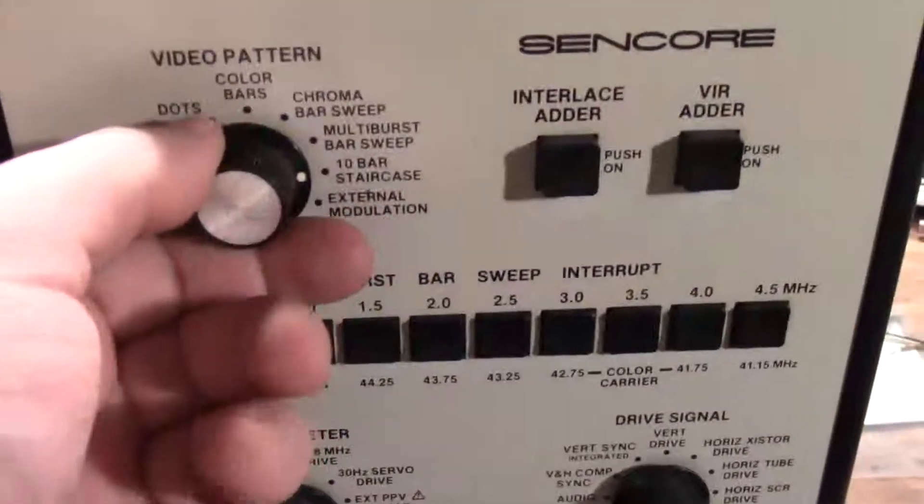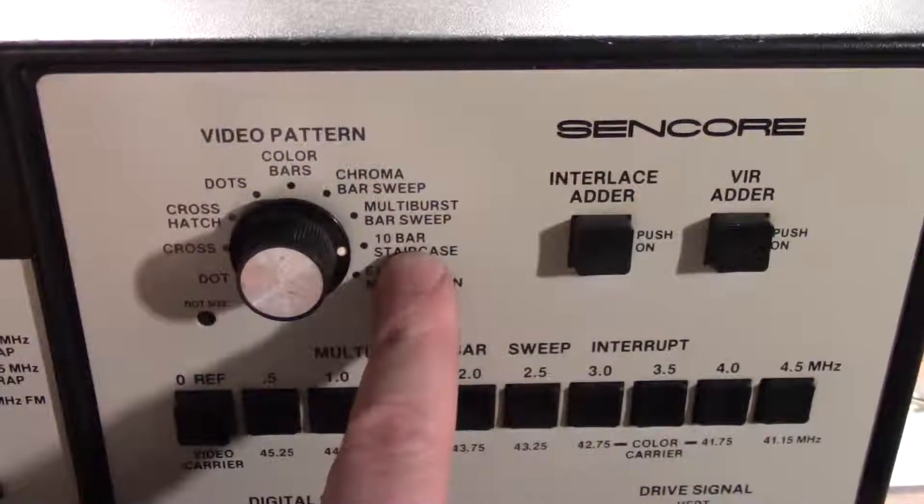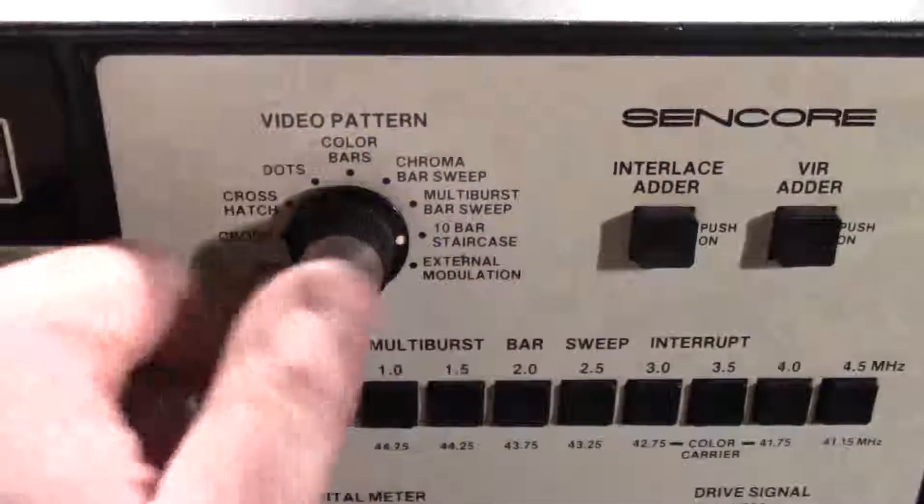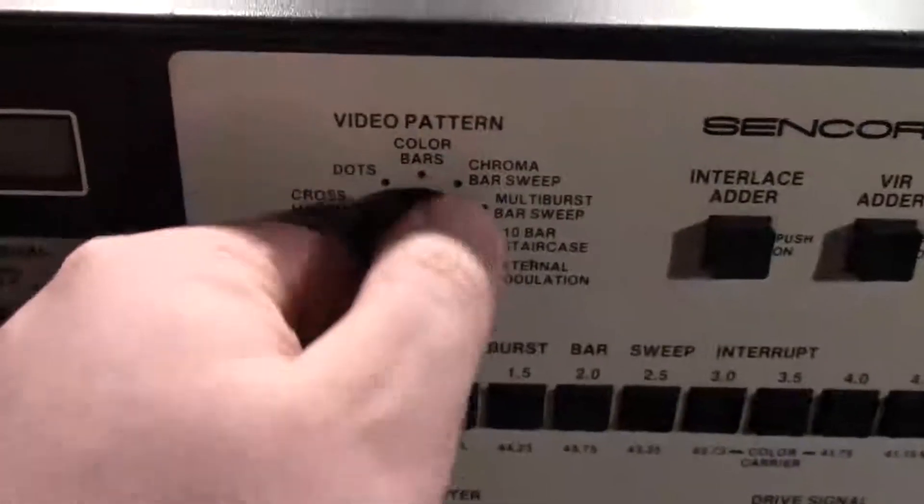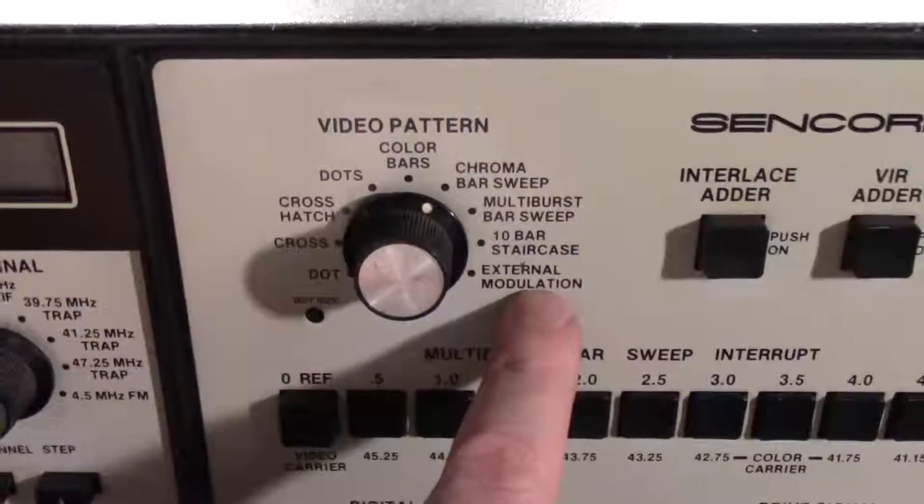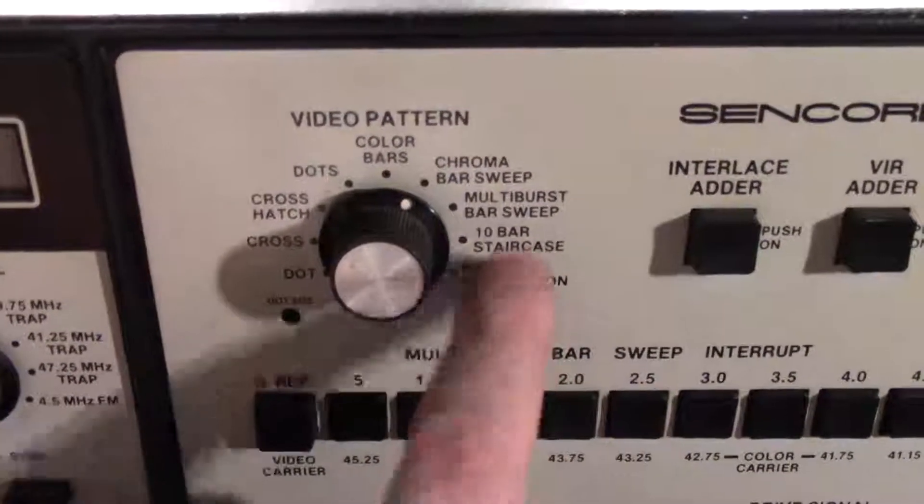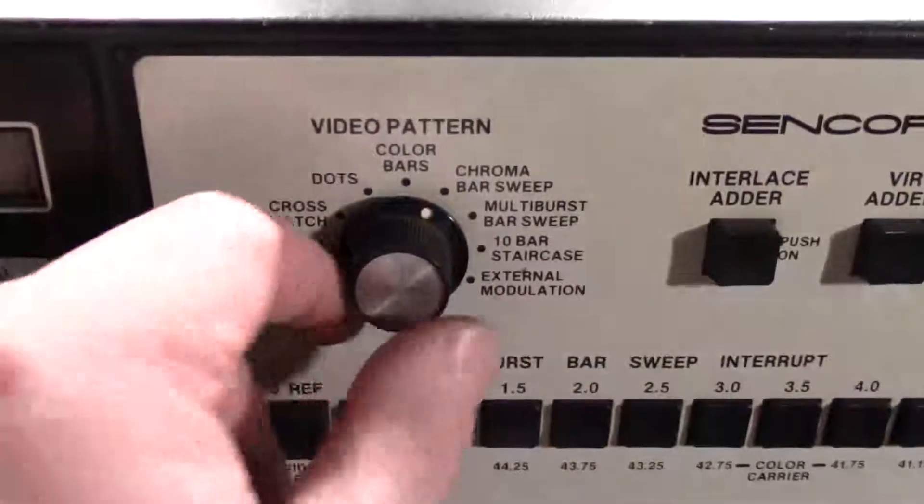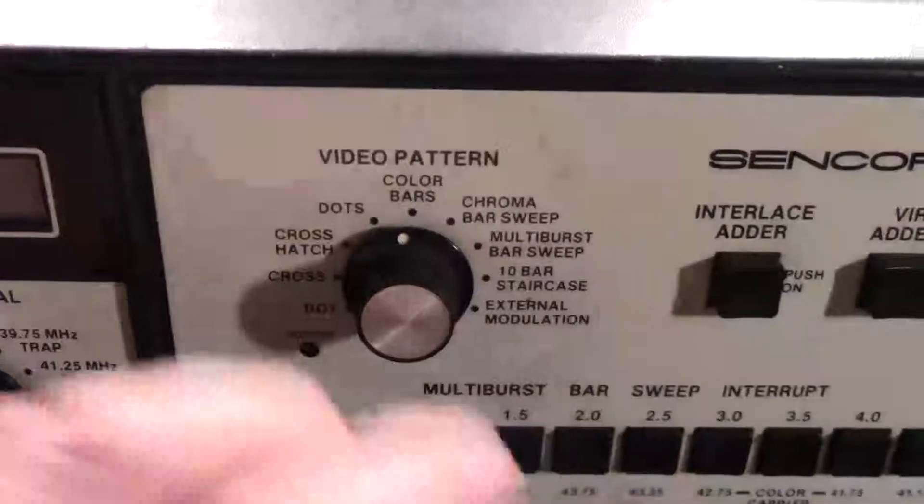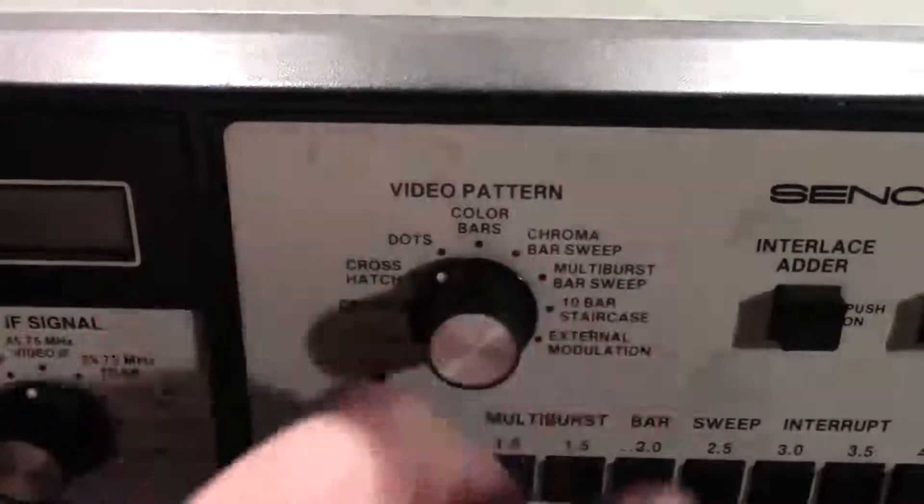You get staircase for setting your grayscale and external modulators. I actually have the color bar generator that does the true, not EIA, true NAB normal color bars. These are just the old stop color bars, which is just the color bar on the screen.